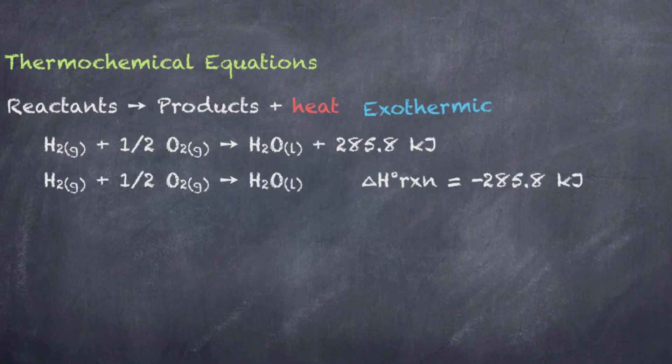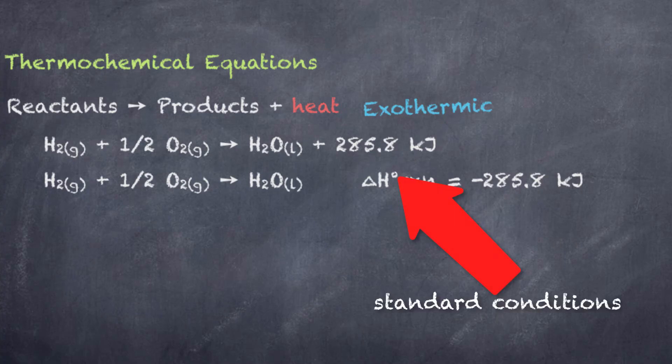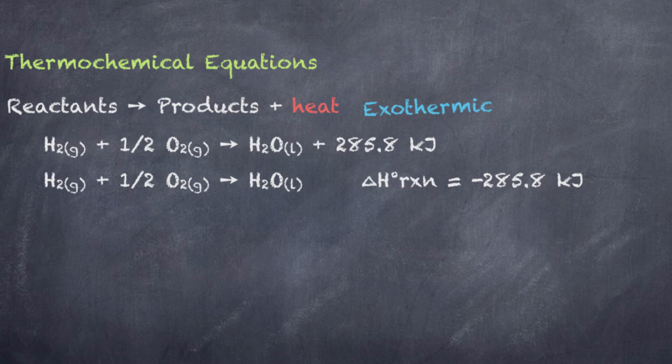We can also represent it separately. And you can see here that there's something called delta H naught, that's what that little degree sign is, of the reaction. And we can see here that we've included it outside the reaction itself. If it's positive, we have an endothermic process. And if it's negative, as is the case here, we have an exothermic process.